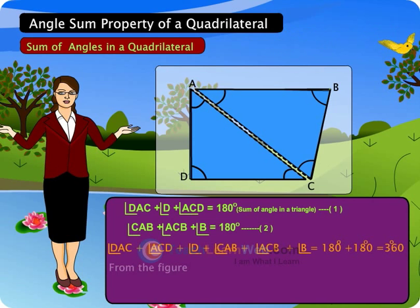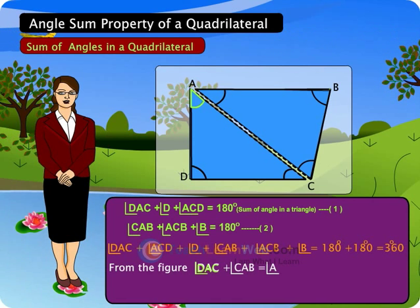Adding 1 and 2, from the figure, angle DAC plus angle CAB is equal to angle A.